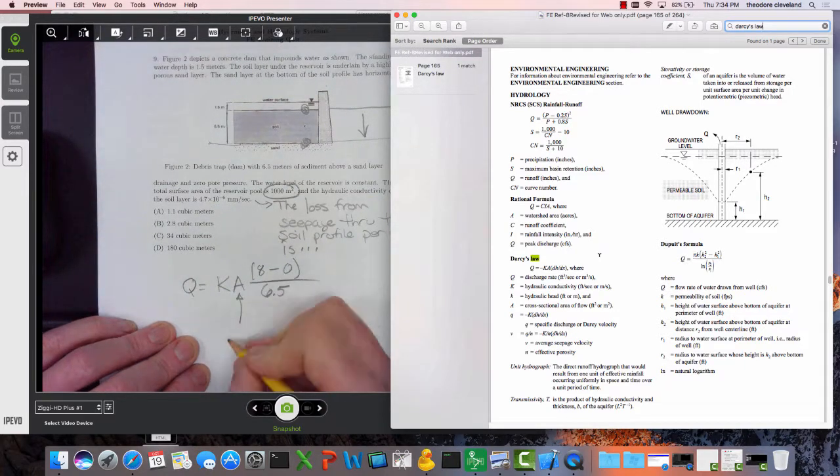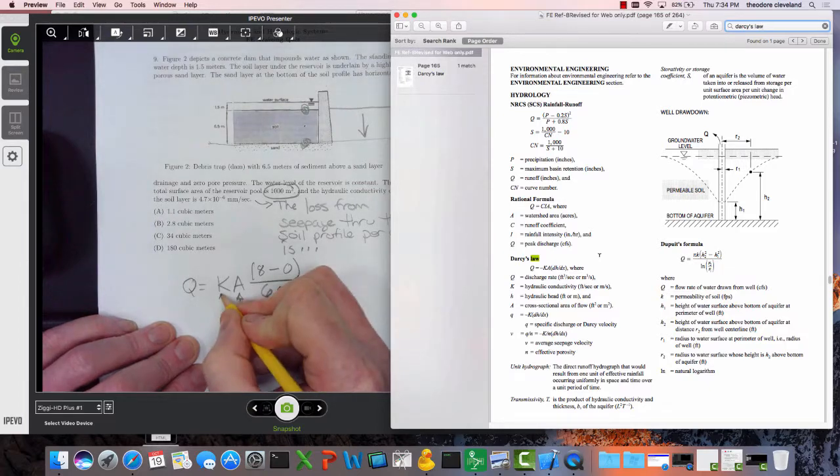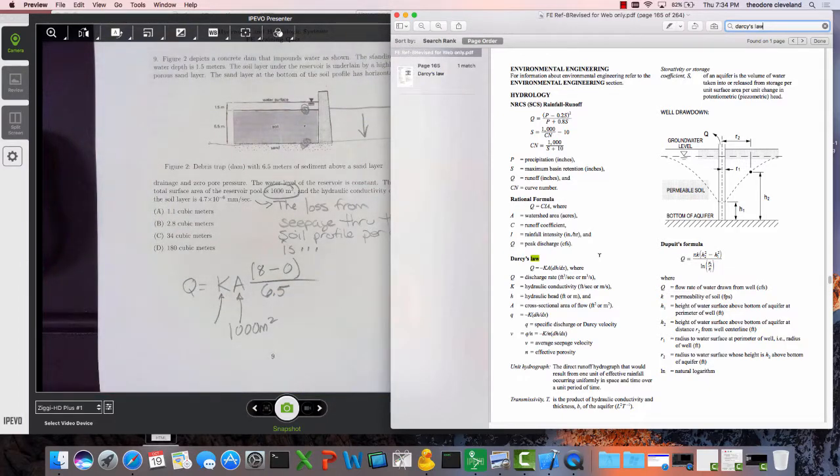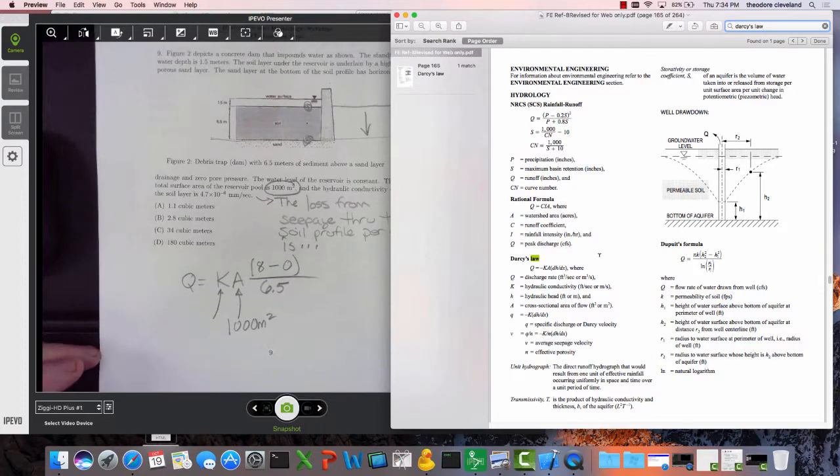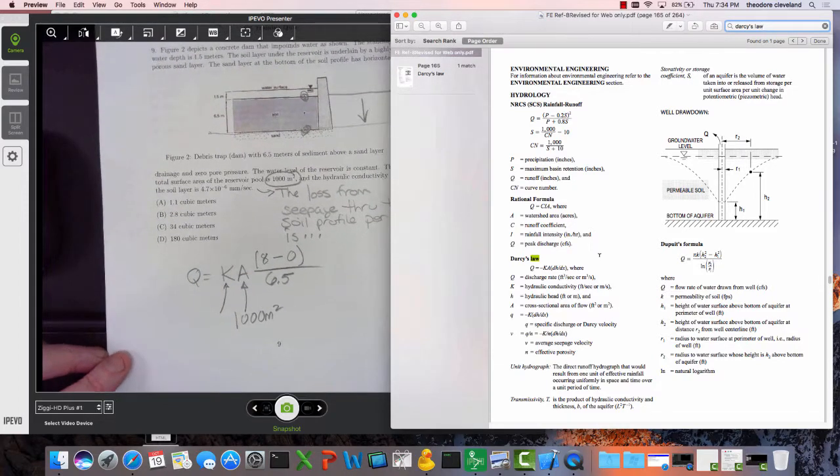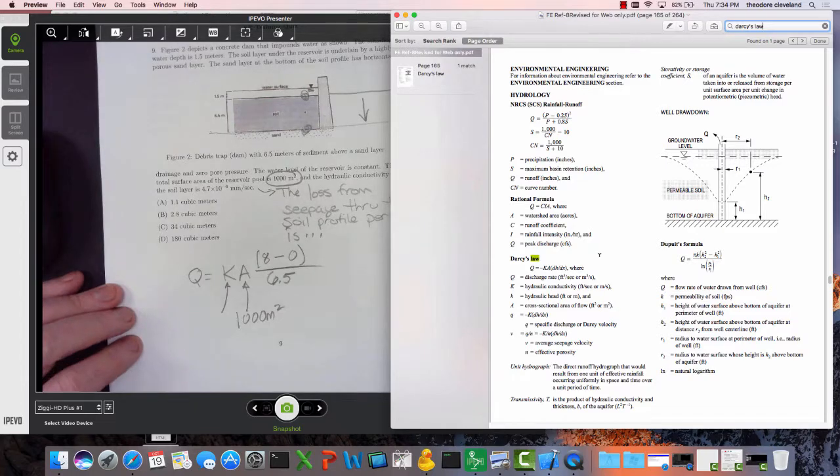1000 meters squared. And lastly we need the hydraulic conductivity in something useful. So how do we turn 4.7 times 10 to the minus 6 millimeters per second into meters per year? We start multiplying stuff, right?